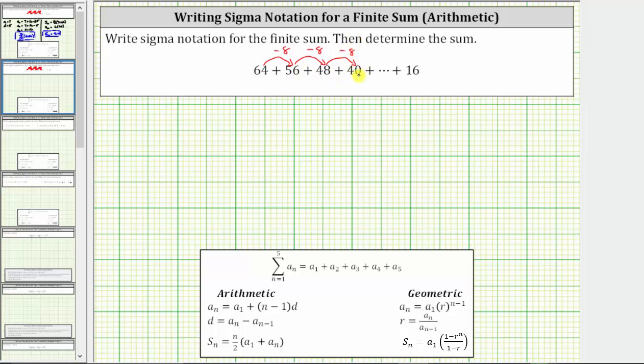Remember, subtracting 8 is equivalent to adding negative 8. So because we are adding negative 8 each time to determine successive terms, this is an arithmetic series, and therefore we can use the arithmetic formulas shown here below to help us write the sum using sigma notation.